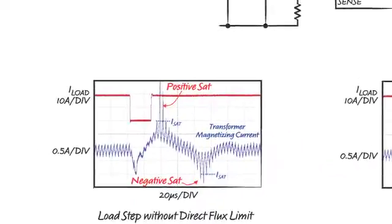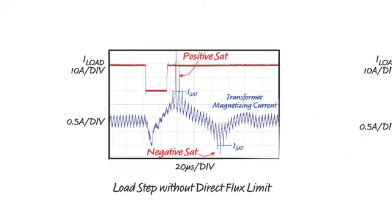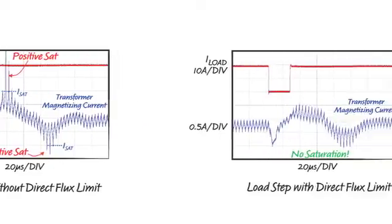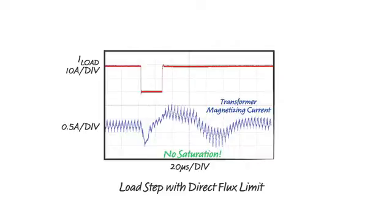This example shows the load and magnetizing current during a load step. Without direct flux limit, saturation occurs, but direct flux limit keeps the magnetizing current under control.